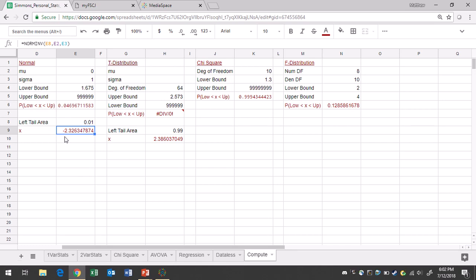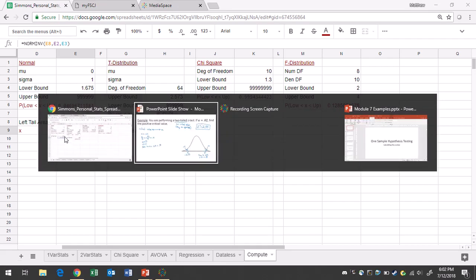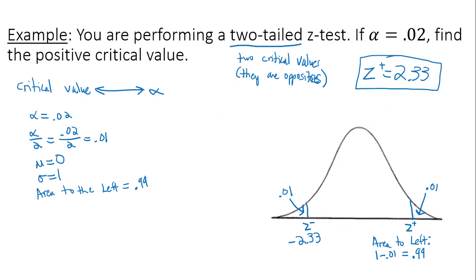So that's just to show you that the two critical values of a two-tailed test are actually always going to be opposites of each other. So that's all I have for you for now. Thanks for watching.